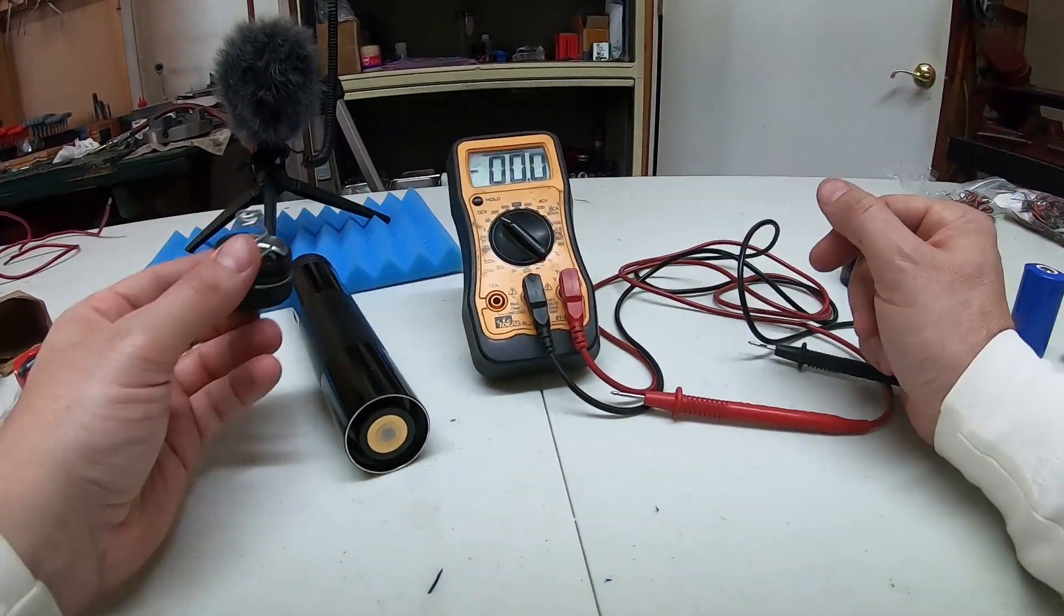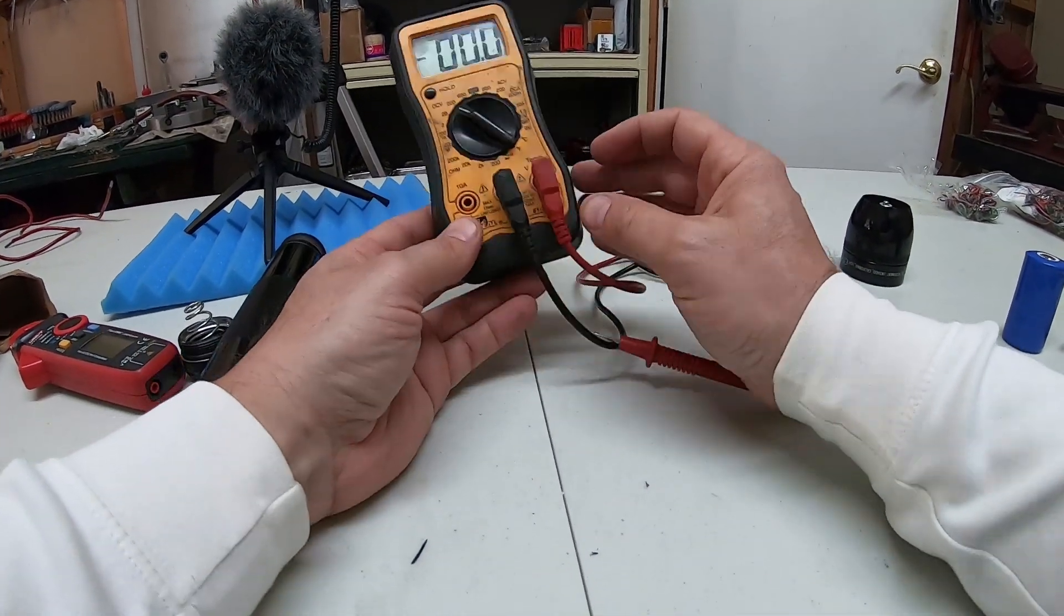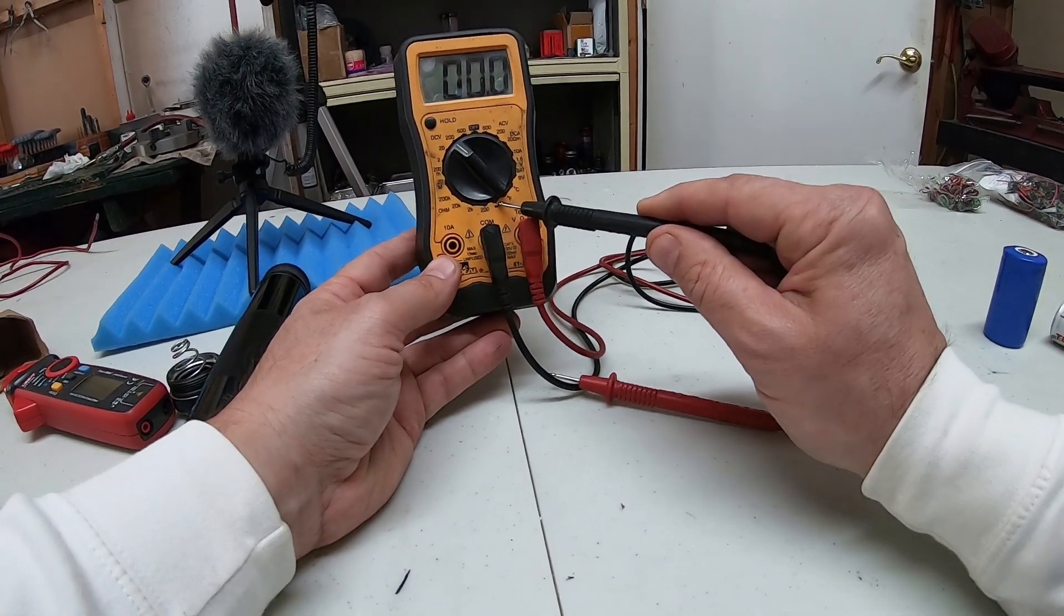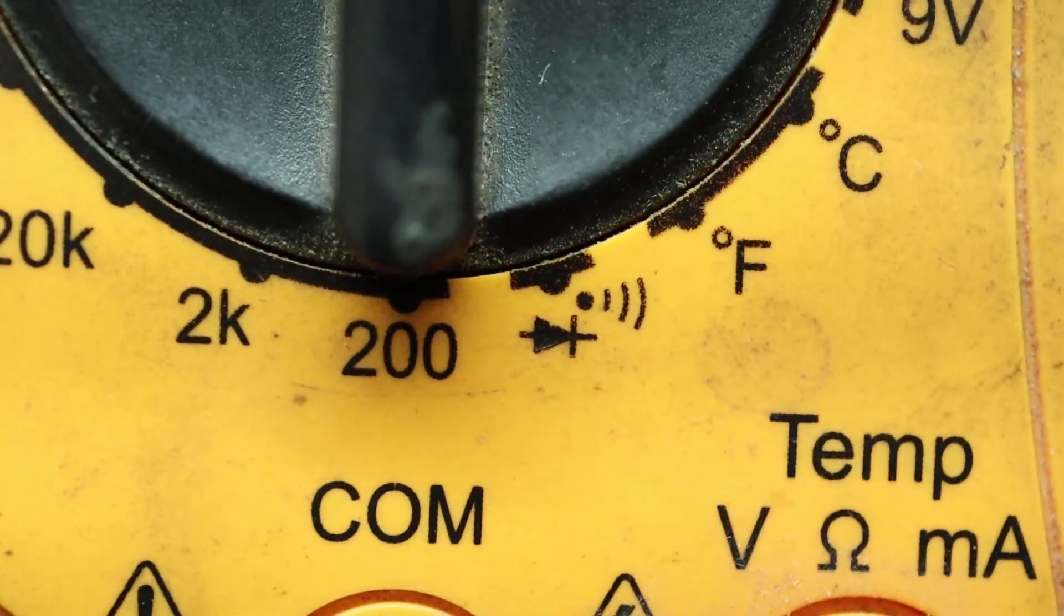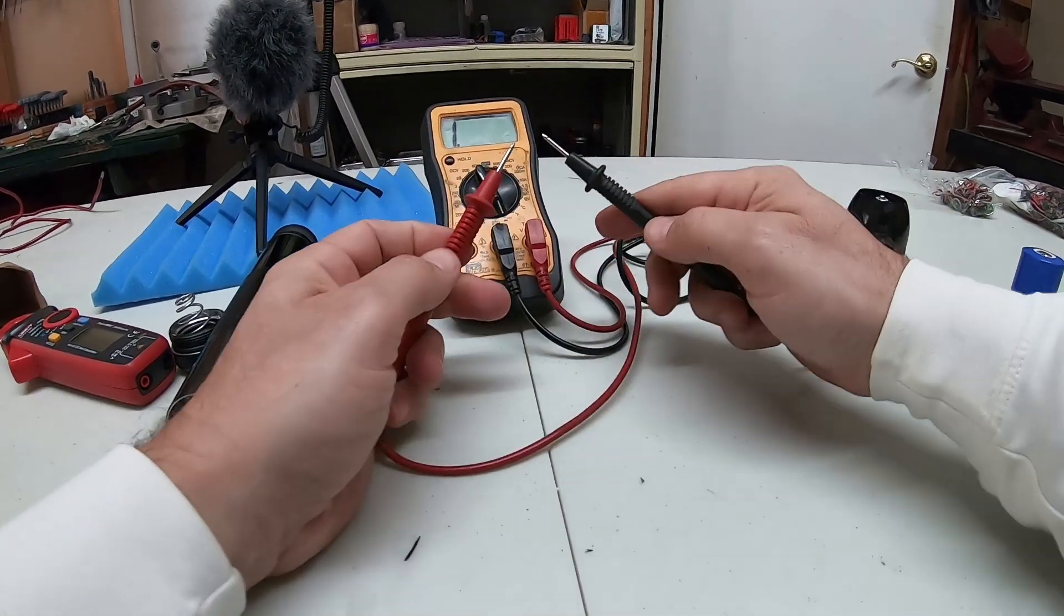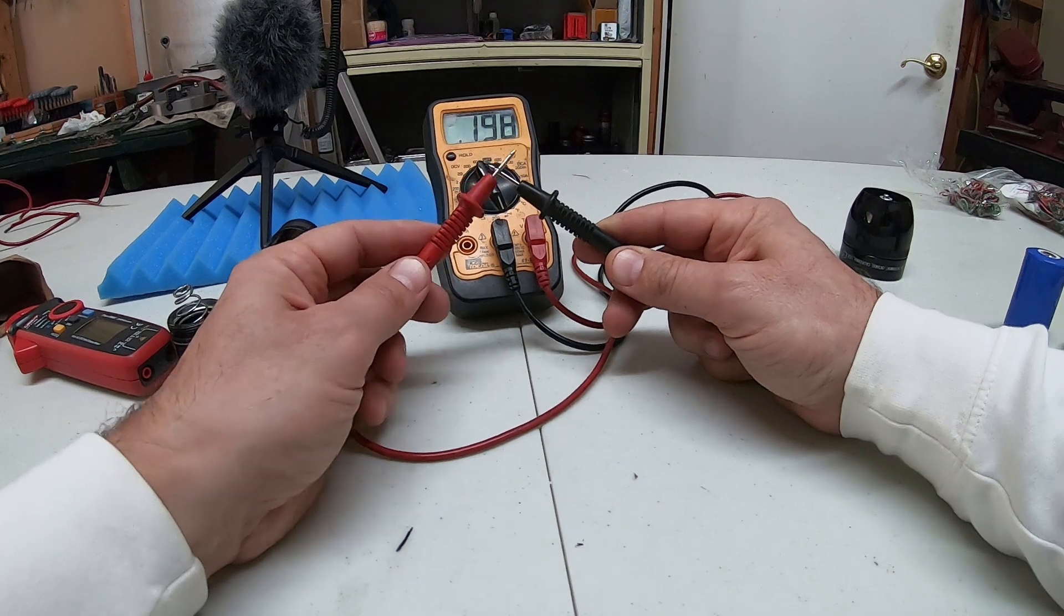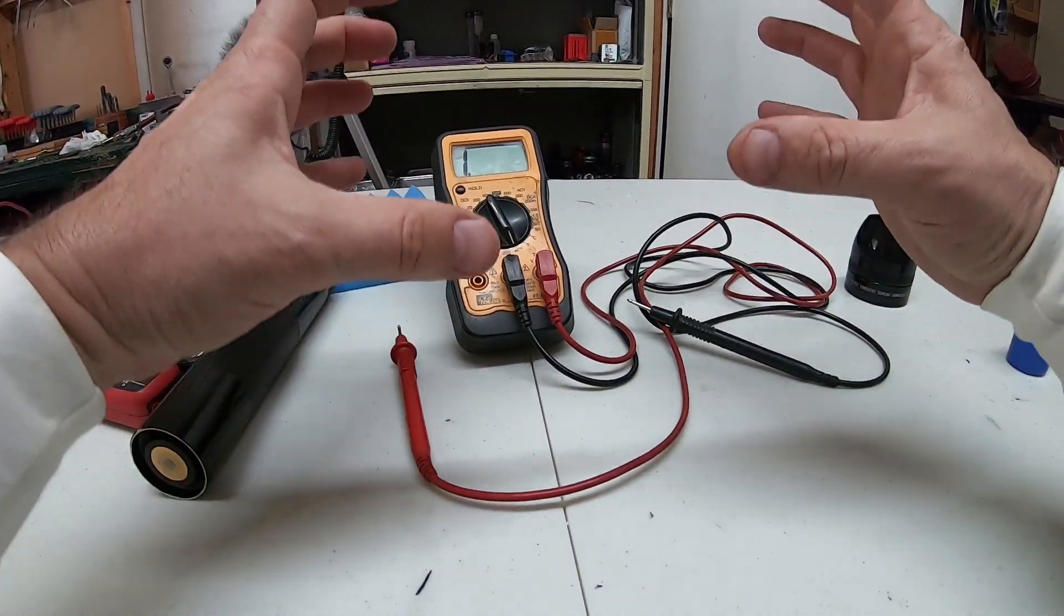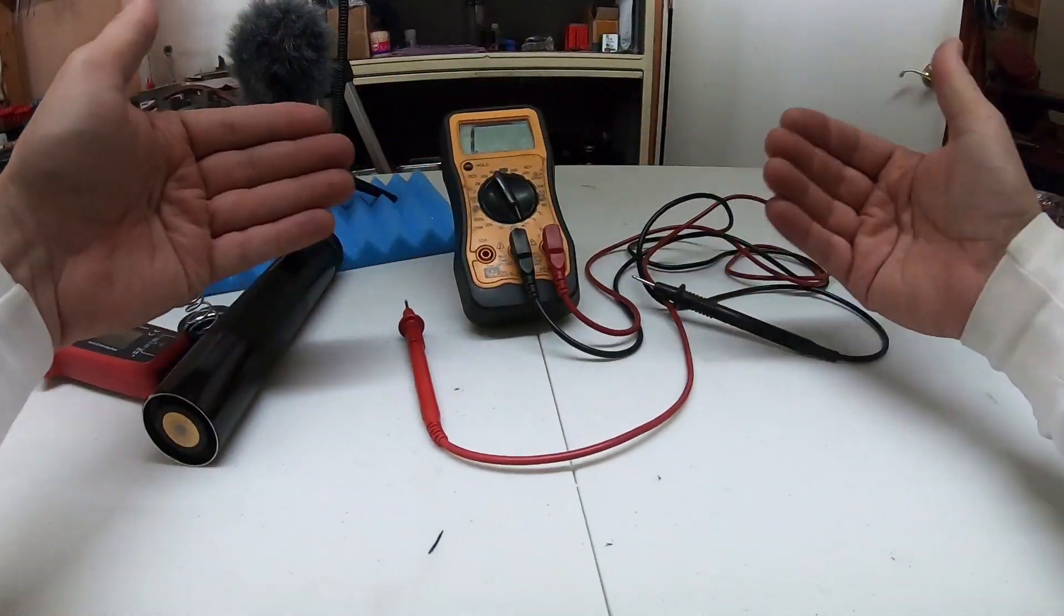Which brings us to the next setting on our multimeter, which is continuity. That is this little thing right here that has like those little sound wave looking things. We switch to that and if you touch the leads together, that is how you will know you have a continuous circuit, that there's no break where the electricity can't get across.